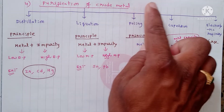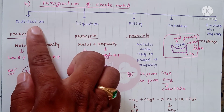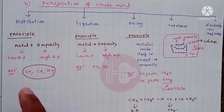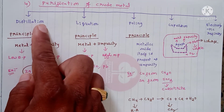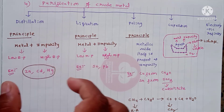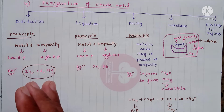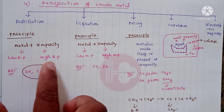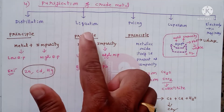The fourth and final step is purification of crude metal, which is called refining. Refining is carried out in five ways: distillation, liquation, polling, cupellation, and electrolytic refining. The principle of distillation is that the metal and impurities differ in their boiling points. The low boiling point metal is separated from the high boiling point impurity.